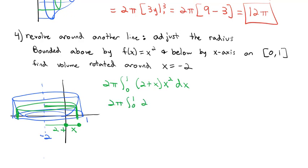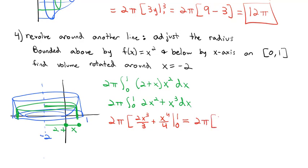Distributing x² gives 2x² + x³ dx. Integrating: 2π · [2x³/3 + x⁴/4] from 0 to 1. Since plugging in 0 subtracts nothing, we have 2π · (2/3 + 1/4) = 2π · (11/12) = 11π/6 cubic units for the volume when rotating around x = −2.